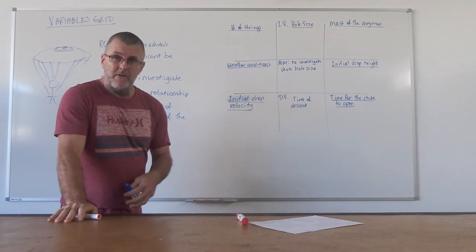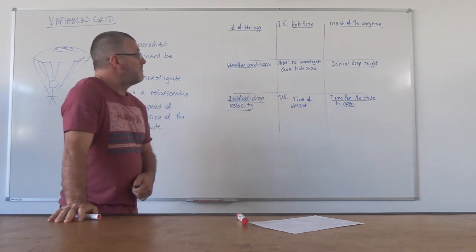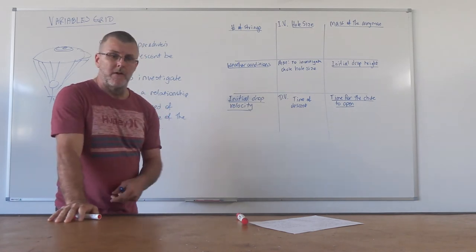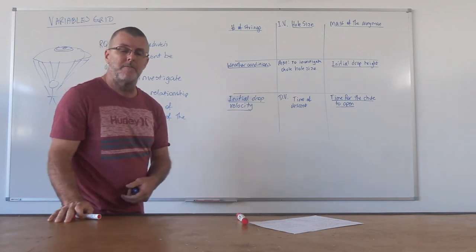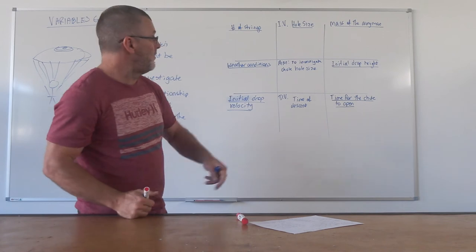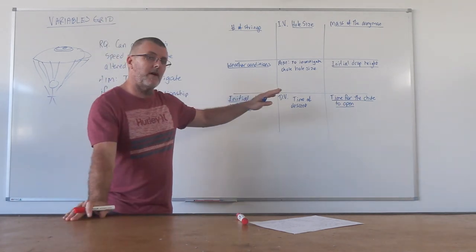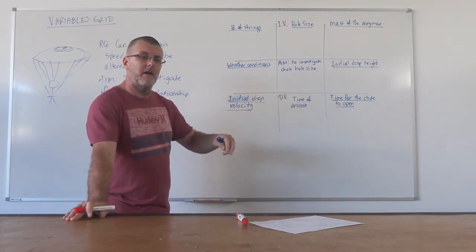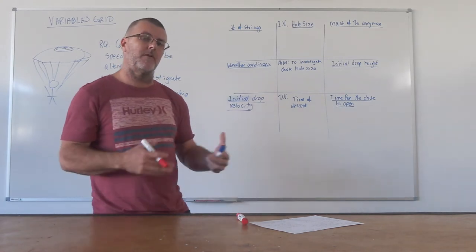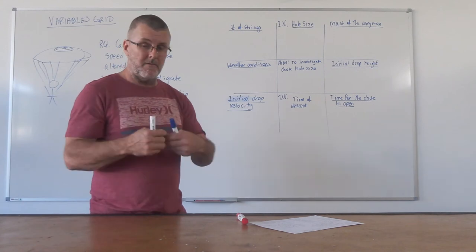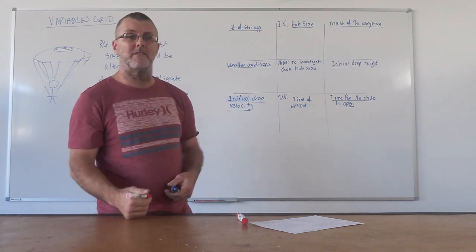Now, you can just leave it like that. And certainly in primary school, that's where I would be leaving it, in the lower primary school. And as you get to sort of grade five and grade six, maybe earlier, but certainly in high school, I'd be looking at getting each one of these and writing in here how you are actually going to control each of those variables. And so this is the next step of the variables grid that actually value adds.